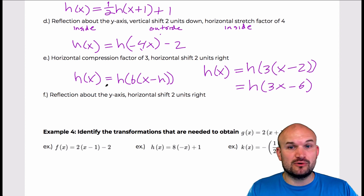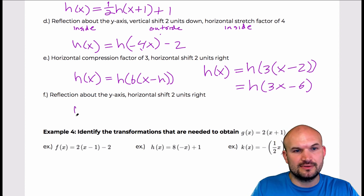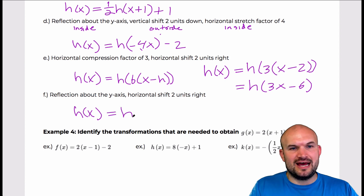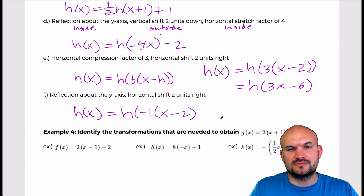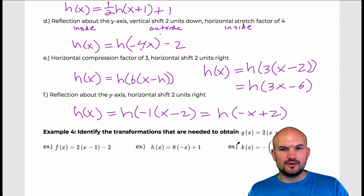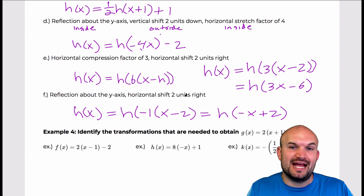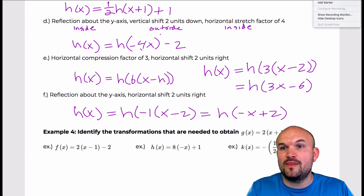Last but not least, we have a reflection about the y-axis and a horizontal shift 2 units to the right. I'm going to have a reflection about the y-axis, so that's a negative 1, and then 2 units to the right would be x minus 2, giving h of negative 1 times (x minus 2). I could simplify that as h of negative x plus 2, by distributing. So that would be your simplified answer to understand the horizontal shift 2 units to the right as well as a reflection about the y-axis.